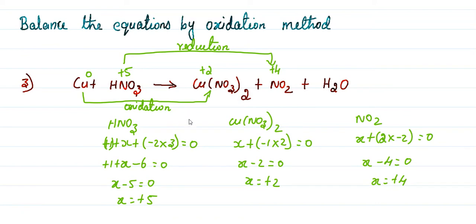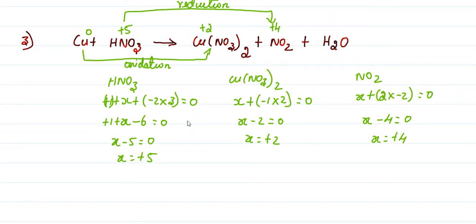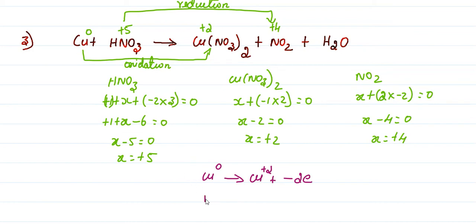Next step is electrons. For copper: copper zero loses its two electrons — oxidation. For nitrogen: nitrogen is plus 5, goes to plus 4 state, it gains one electron — reduction. So both oxidation and reduction numbers are found. Now we cross multiply: nitrogen gets coefficient 2, and copper gets coefficient 1.